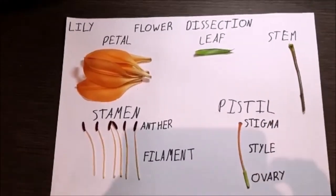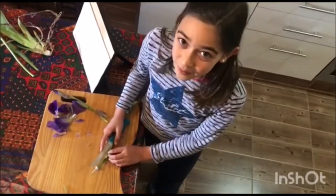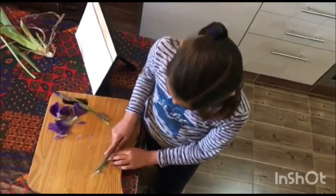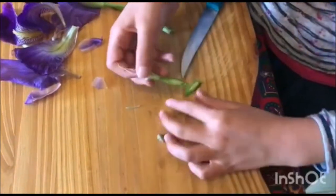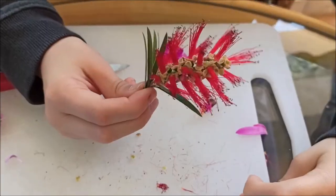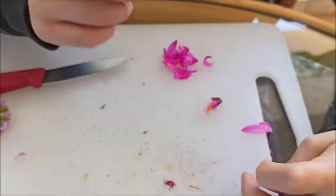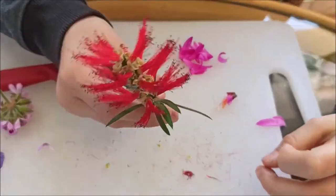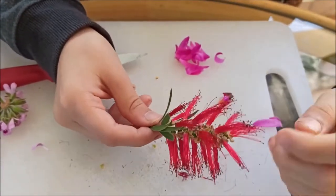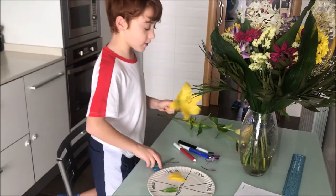The pistil can use the pollen to make seeds. These flowers contain only one part — the main part, the stamen.